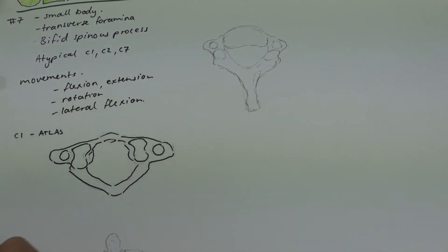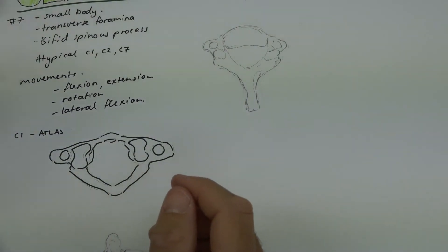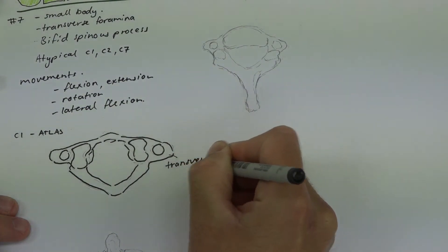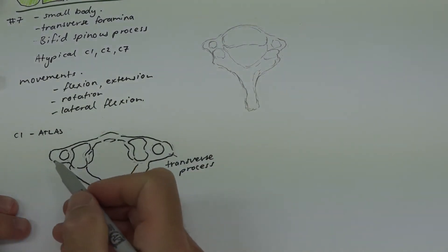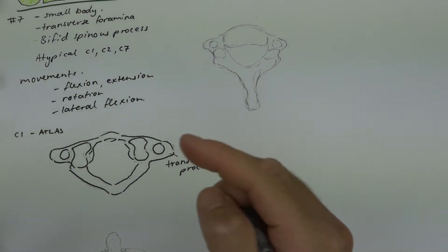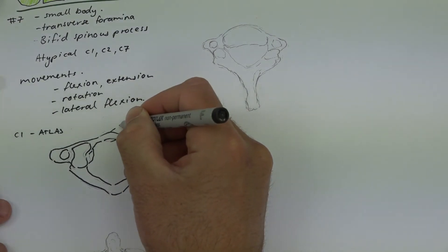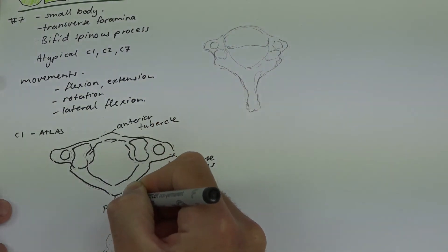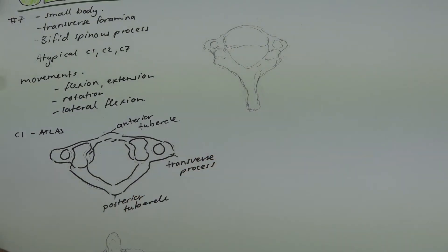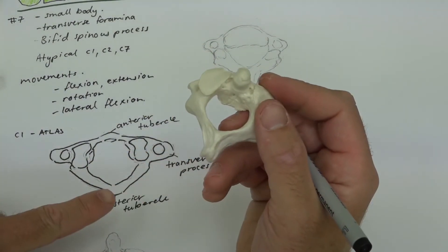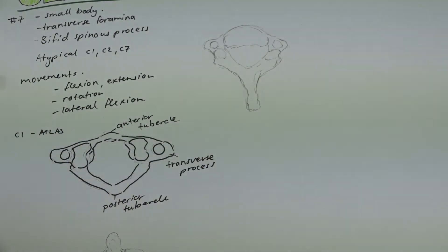C1 does not have a body — the body of the vertebra does not exist in C1, which is primarily why it's classed as atypical. It has structures out to the side called the transverse processes, one on either side. You can actually feel the approximate position of these by pushing just behind your jaw. This part is called the anterior tubercle, and the same at the back is called the posterior tubercle.